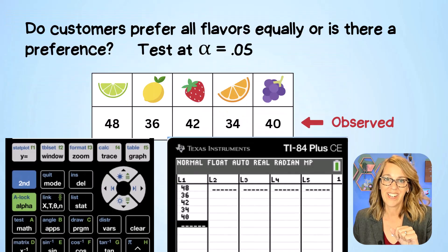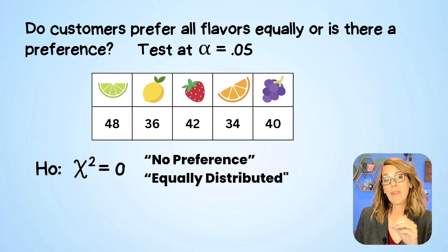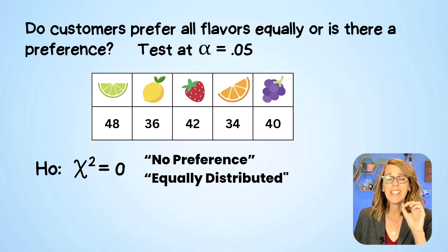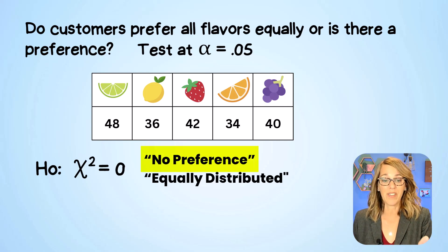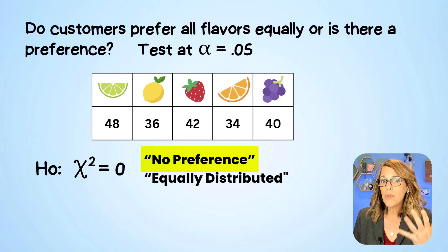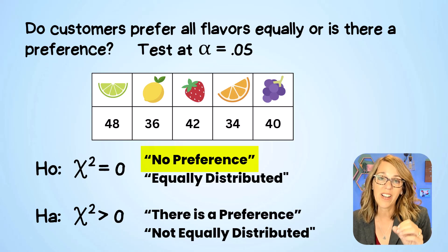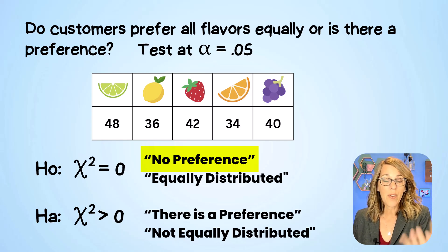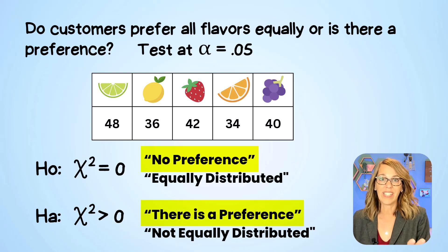Back to our hypothesis test. Let's do the hypotheses next starting with the null hypothesis. The null hypothesis says that chi-square is equal to zero, meaning that there is no preference amongst the flavors and that these are equally distributed from flavor to flavor. Our alternative hypothesis however says that chi-square is significantly greater than zero, meaning that there is a preference and they're not evenly distributed.